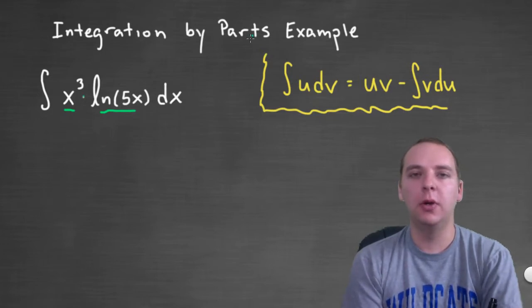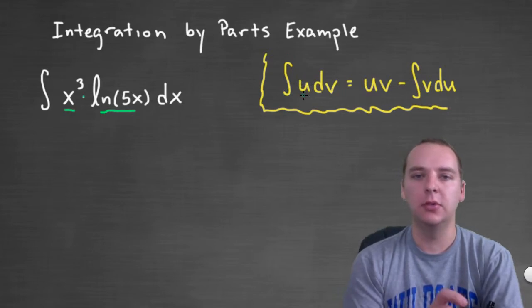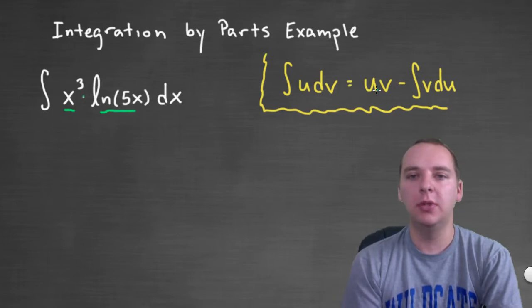So just a reminder of what integration by parts is, it says that the integral of u dv, so u times dv, equals u times v minus the integral of v du.